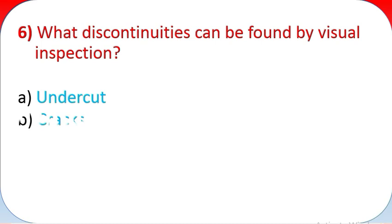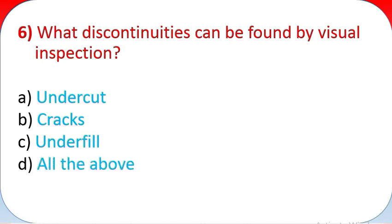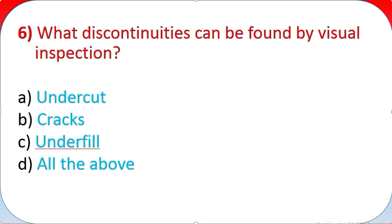Question 6: What discontinuities can be found by visual inspection? A: Undercut. B: Cracks. C: Underfill. D: All the above.